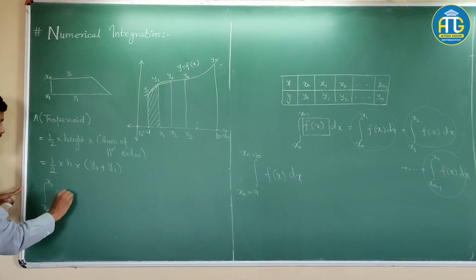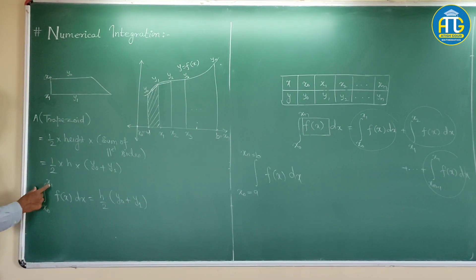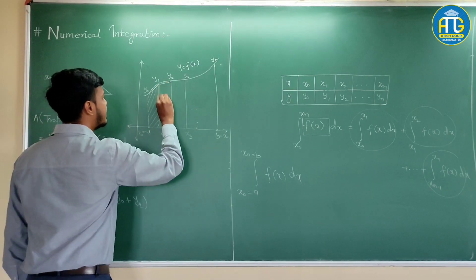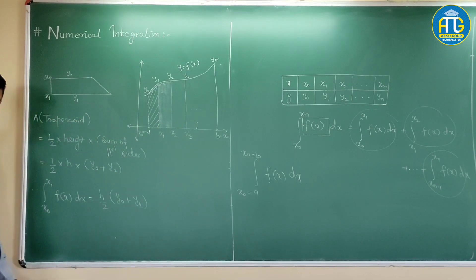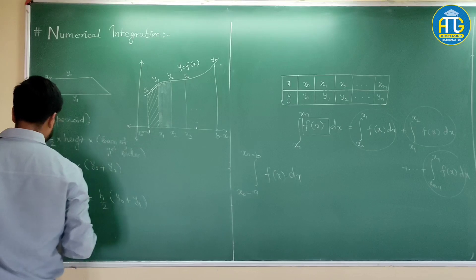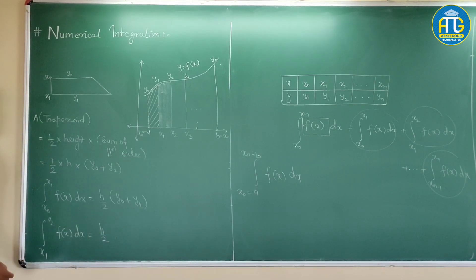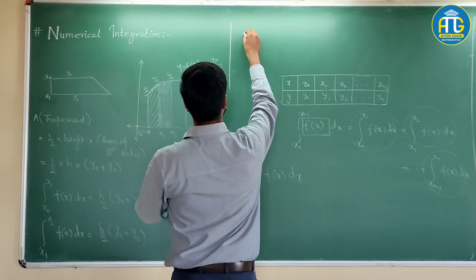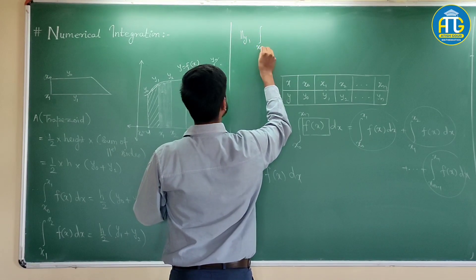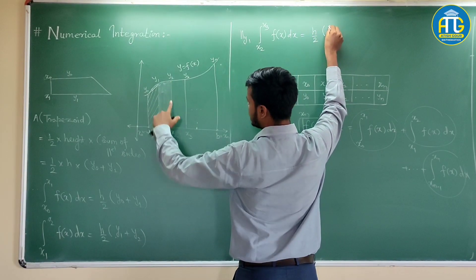So the integral from x0 to x1 of f(x) dx equals h/2 times (y0 + y1). Now moving to the next interval from x1 to x2: the integral from x1 to x2 of f(x) dx again gives a trapezoid, so it equals h/2 times (y1 + y2). For the next interval, the integral from x2 to x3 of f(x) dx equals h/2 times (y2 + y3).